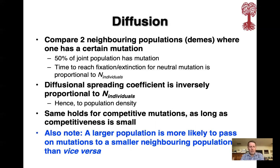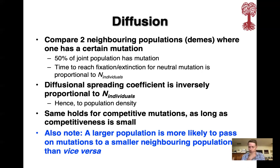Diffusion is a main factor. In the model we always compare two neighboring populations — two DEAMs — where one has a certain mutation and the other does not, so 50% of the joint population has the mutation. The time to reach fixation or extinction for a neutral mutation is proportional to the number of individuals, which means the diffusion spreading coefficient is inversely proportional to population density. High population density means slow demic diffusion. The same holds for competitive mutations as long as competitiveness is small, which it usually is. Also, a larger population is more likely to pass on mutations or genes to a smaller neighboring population than vice versa.